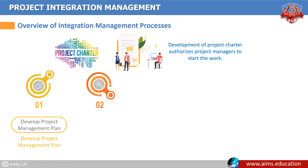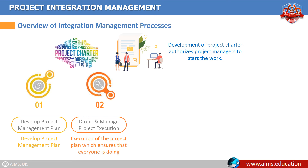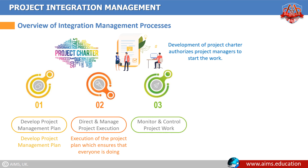Second process: after the planning is done, the next process is direct and manage project execution. This process is the execution of the project plan, which ensures that everyone is doing what they should be doing. Third process: next is monitor and control project work. As a good project manager, you constantly monitor every single thing that goes on in the project.